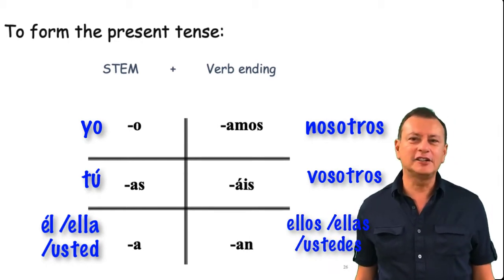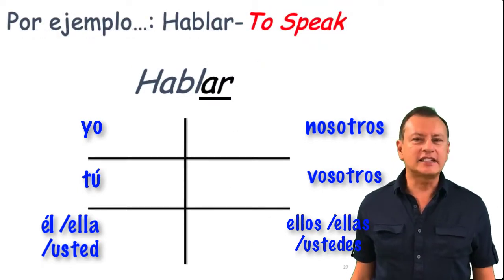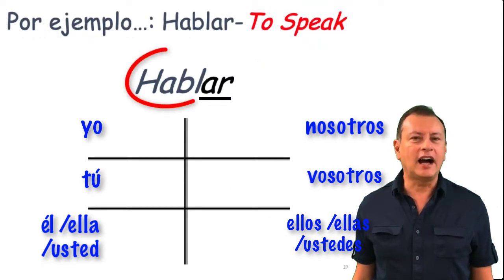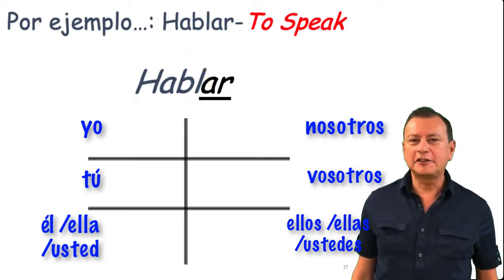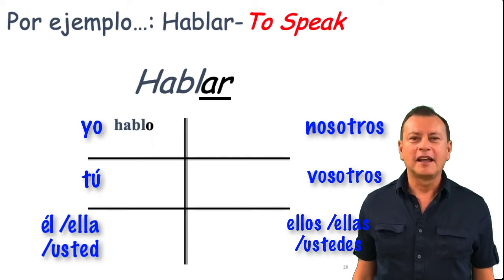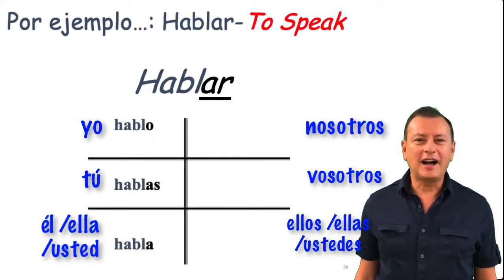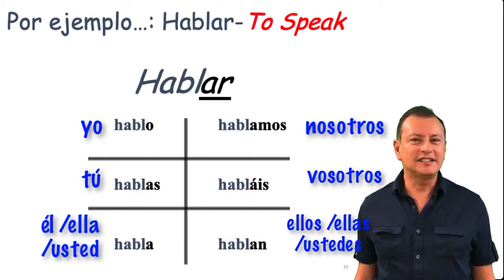Let's practice. The verb hablar means to speak in Spanish. The stem is habl. Repeat after me: hablo, hablas, habla, hablamos, habláis, hablan.